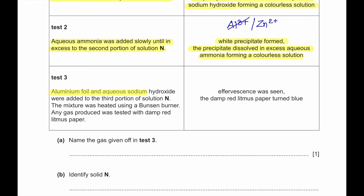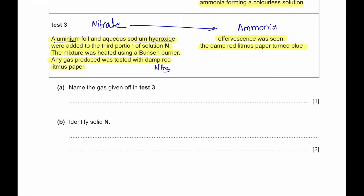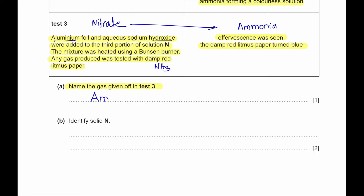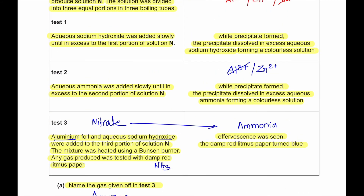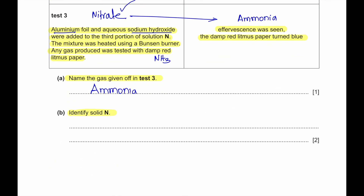Aluminum foil and aqueous sodium hydroxide were added to the third portion of solution N. Aluminum followed by sodium hydroxide and heating is a test for nitrate. The mixture was heated and any gas was tested with damp red litmus paper, which tests for ammonia. Effervescence was seen, the damp red litmus paper turned blue, confirming ammonia was produced. Name the gas given off in test 3: ammonia. Since the solid contains zinc and nitrate, identify solid N as zinc nitrate.